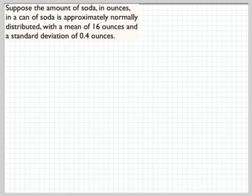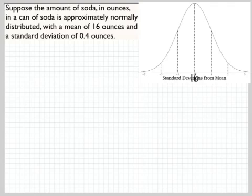We're looking at normal distributions again, and then also repeating a random variable and adding them up. And we're going to see how those fit together. I just created a sequence of problems to work through. So, here's my problem. Suppose the amount of soda in ounces in a can of soda is approximately normally distributed with a mean of 16 ounces and a standard deviation of 0.4 ounces. So let's remember what this means, what this looks like.